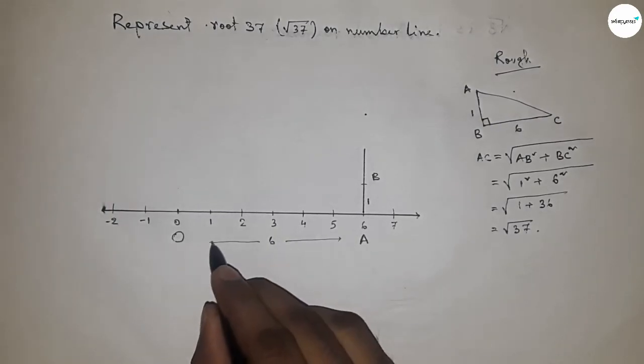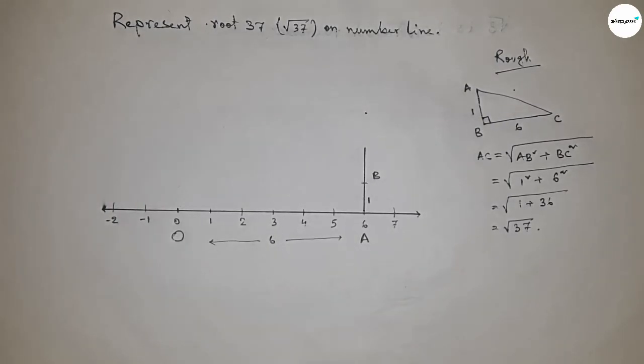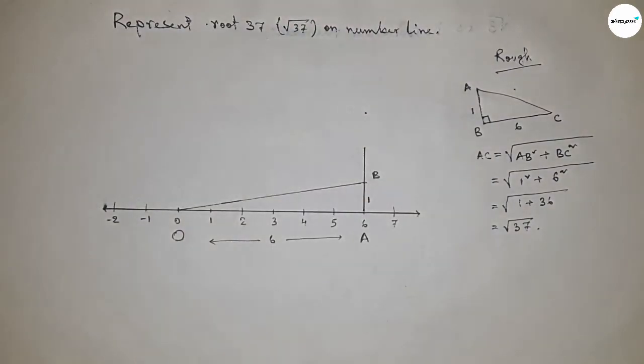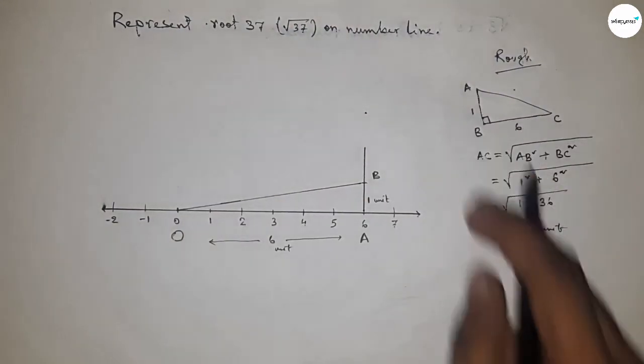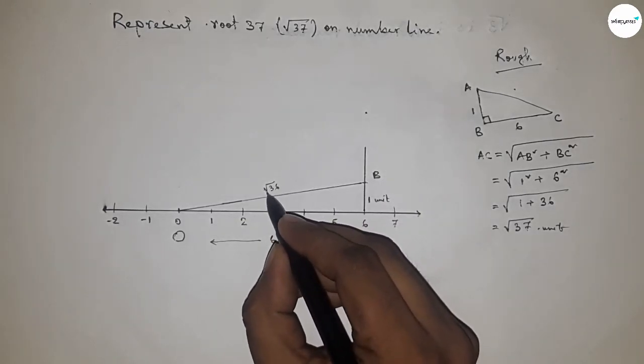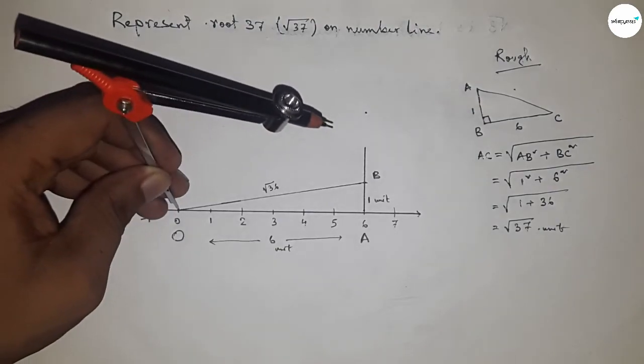This is the hypotenuse. From this, we can say that OB equals √37 units.